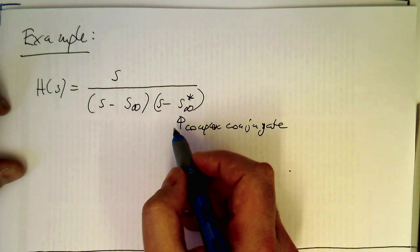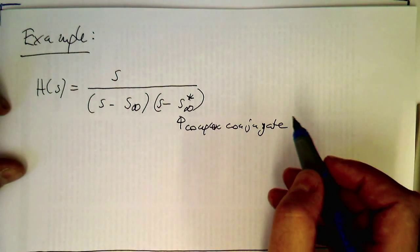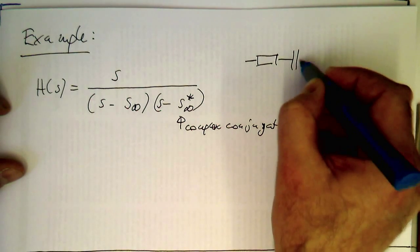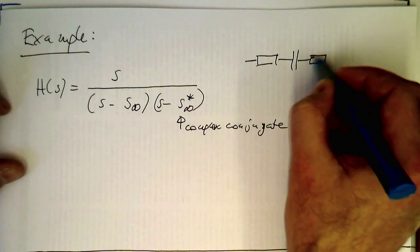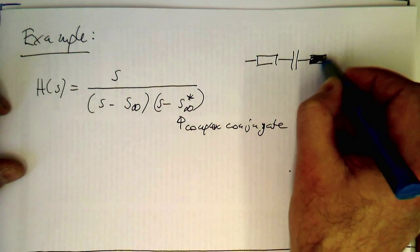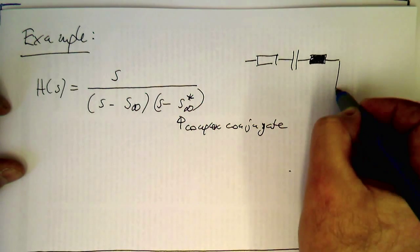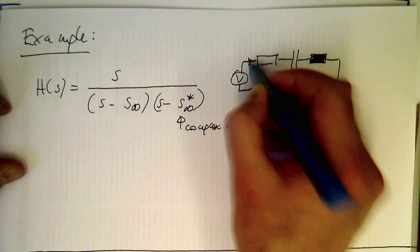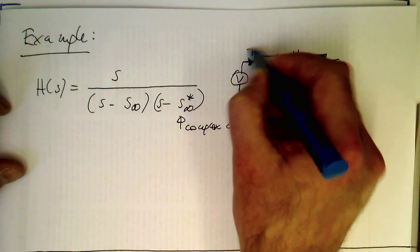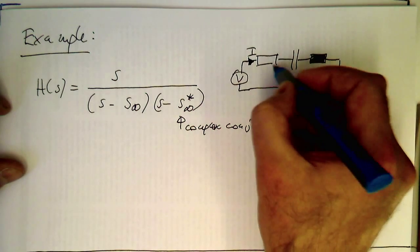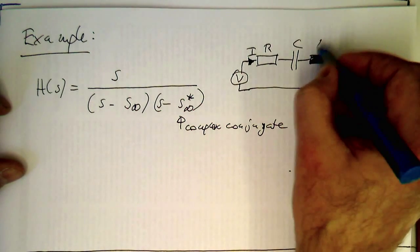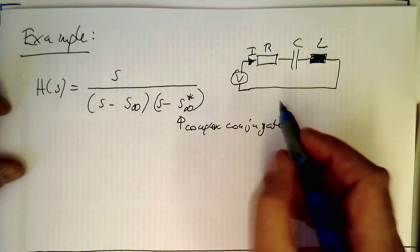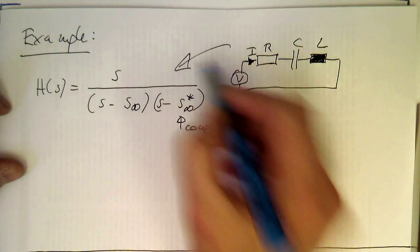A function like this is essentially a resonator. If we draw this as a circuit diagram, we have something like this — with the inductor drawn in the old European style — and so this is something like I and this is the voltage. We have a resistor, a capacitor, and an inductor. Without going into detail, this is represented by this function here.